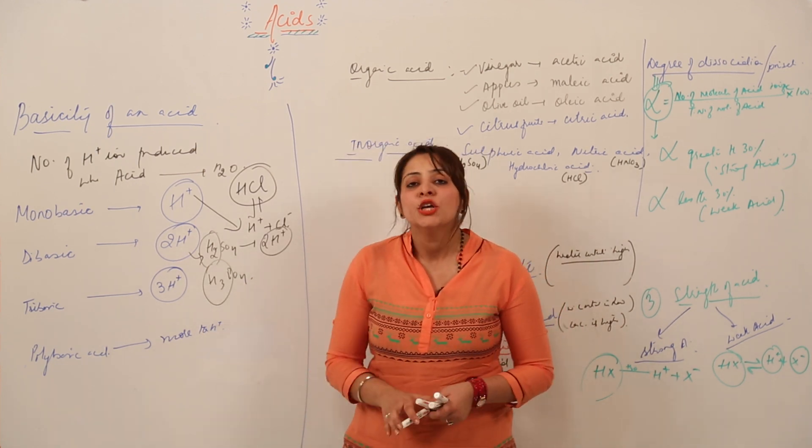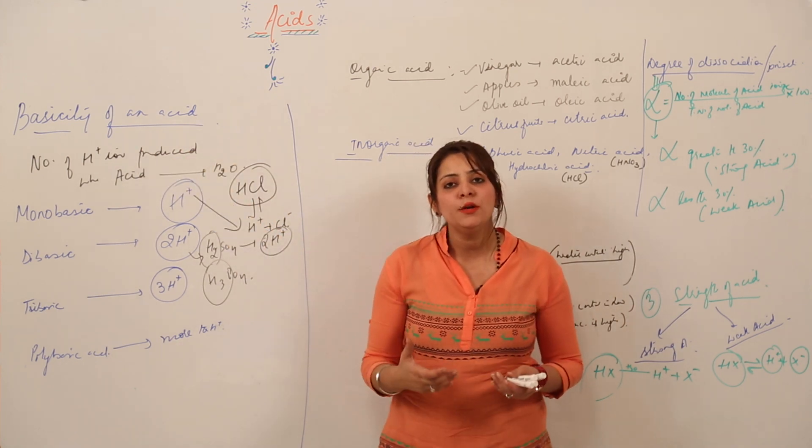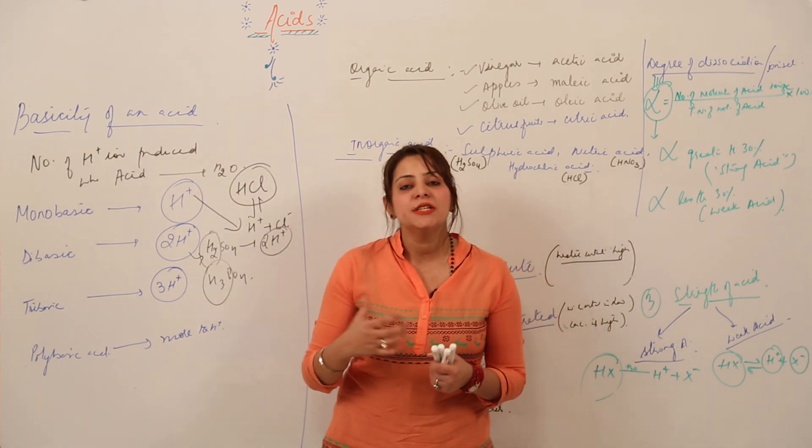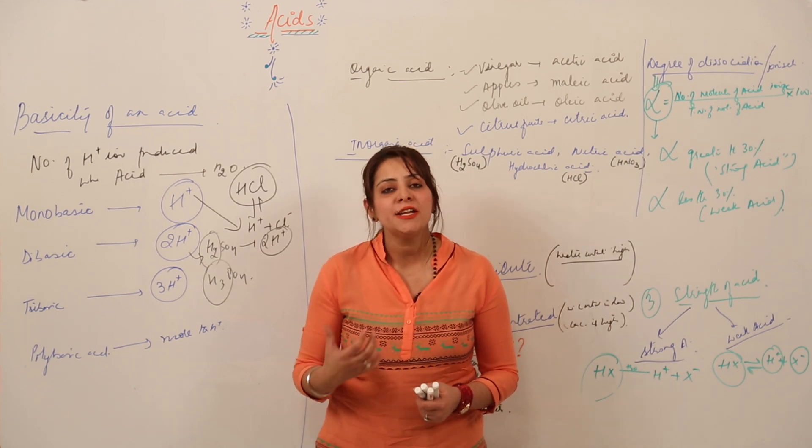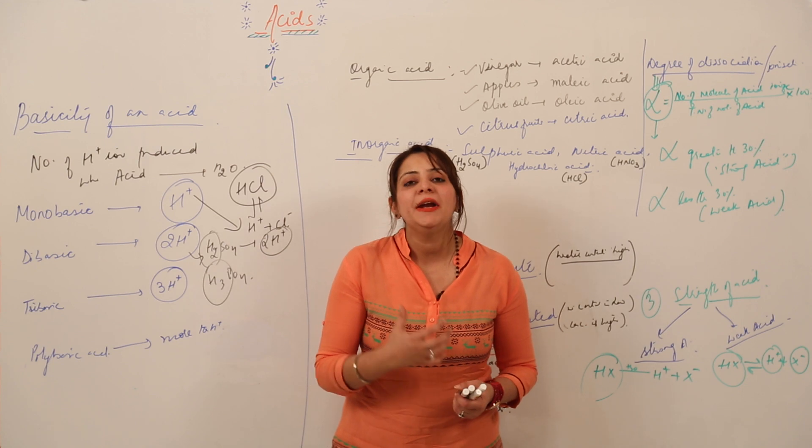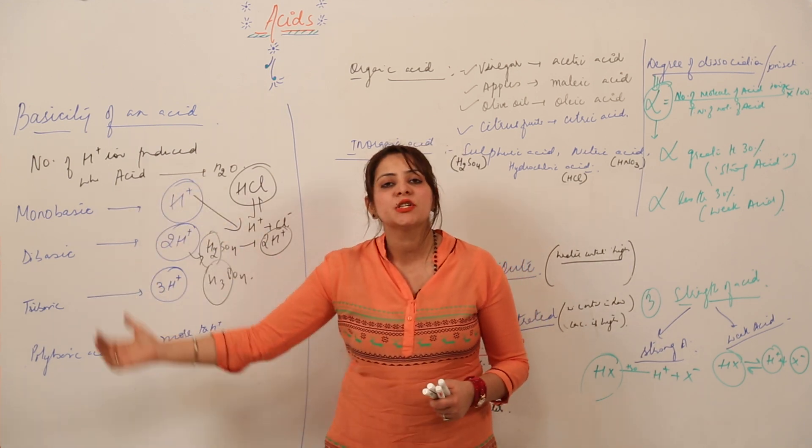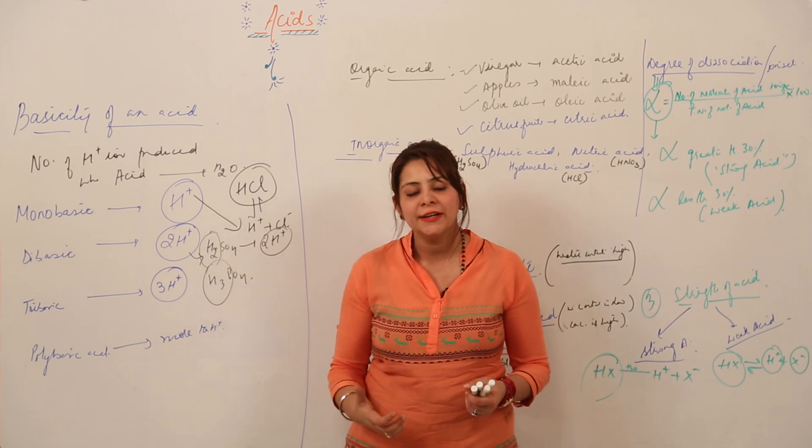So this is the basicity. If somebody asks you about basicity, what are we going to answer? It is the number of H+ ions which an acid produces when it is dissolved in water. And depending upon that number, we classify it under monobasic, dibasic, tribasic, or polybasic.